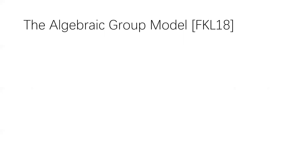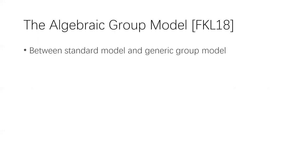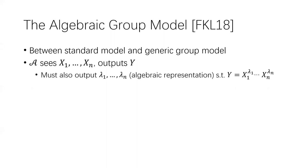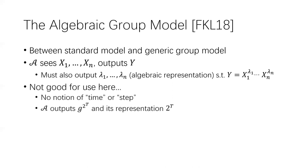We want to analyze the RSW assumption in an idealized model. A natural candidate would be the algebraic group model, or AGM, proposed in 2018. The AGM stands between the standard model and the general group model. However, it is easy to see that the plain AGM is not good for our context, because the AGM has no notion of time or steps — an algebraic algorithm can just output G^(2^T) together with its representation 2^T in just one step.